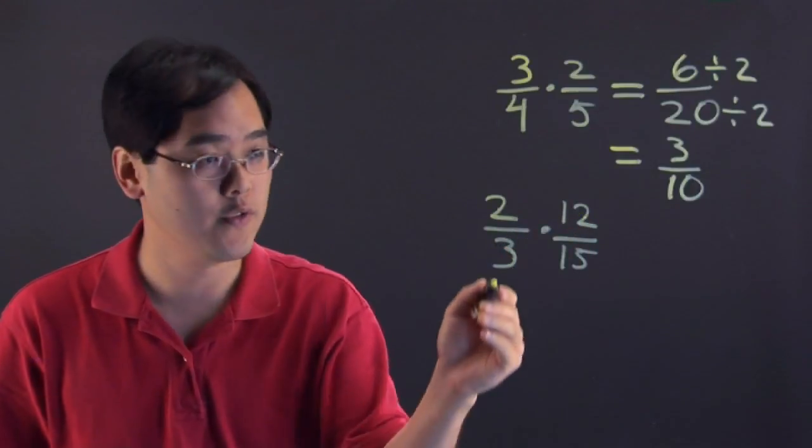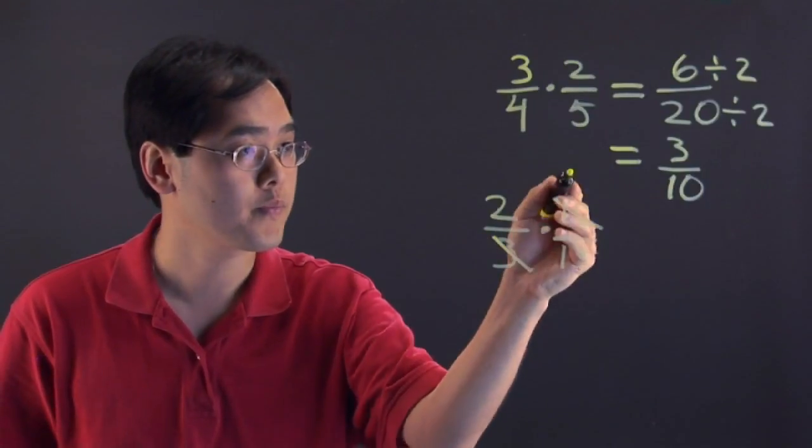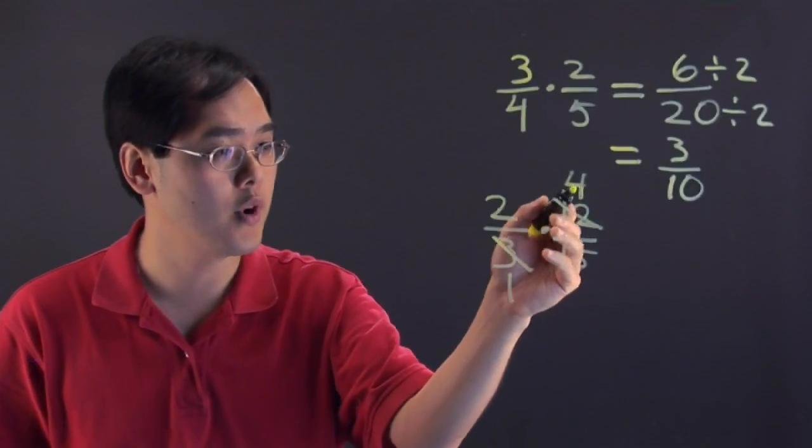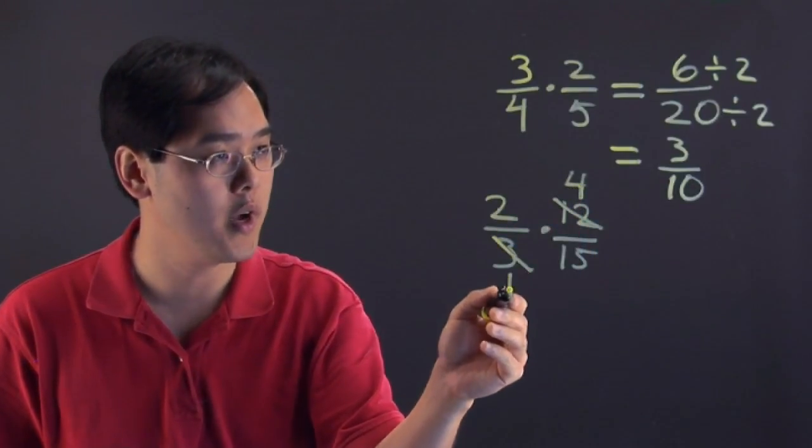So we're going to reduce, 12 divided by 3 is going to be 4 and 3 divided by 3 is going to be 1.